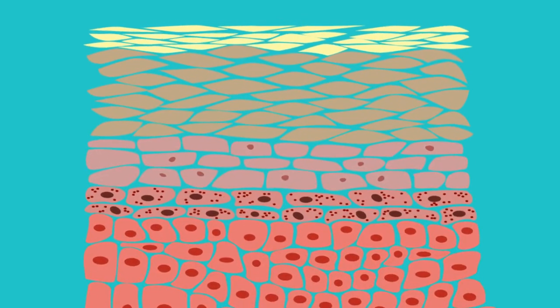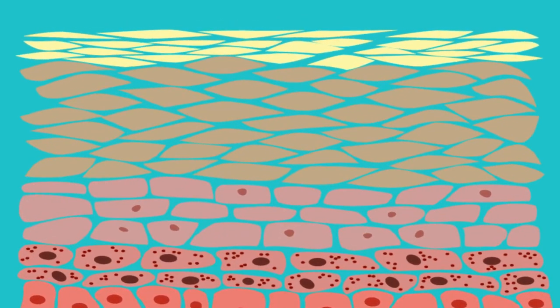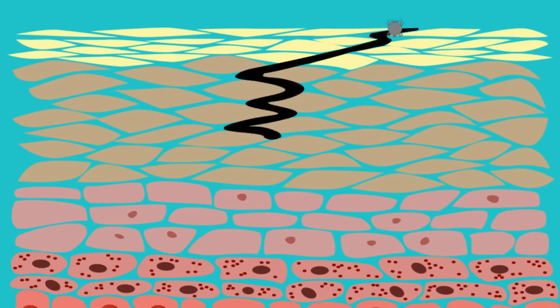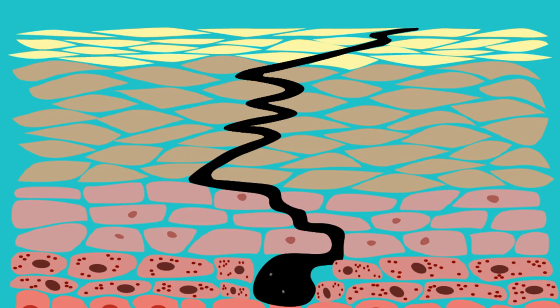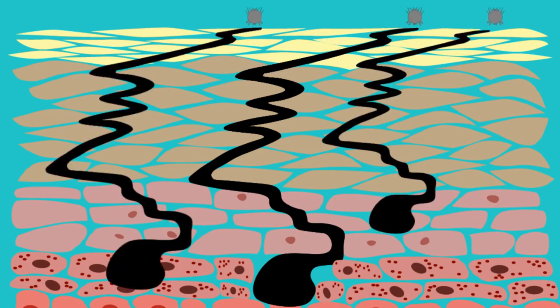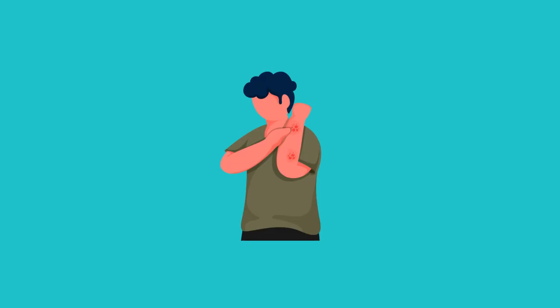The adult mite lives off dead cells, digs burrows through the skin, and the female mite lays eggs inside these burrows. The eggs hatch, larvae come out and mature into adults, and the cycle repeats again. The mites thus keep on multiplying, creating new burrows, irritating the immune system, and causing more skin lesions and itching.